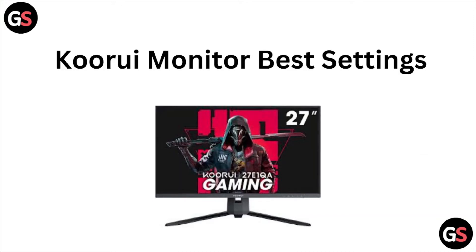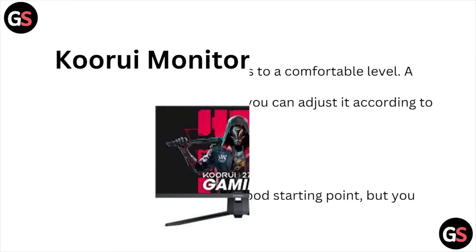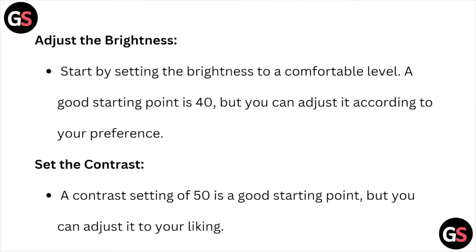Hi, welcome back to the YouTube channel. In this particular video we'll see the Curio monitor best settings. Start by setting the brightness to a comfortable level — a good starting point is 40, but you can adjust it according to your preference. Set the contrast to 50 as a good starting point, but you can adjust it to your liking.